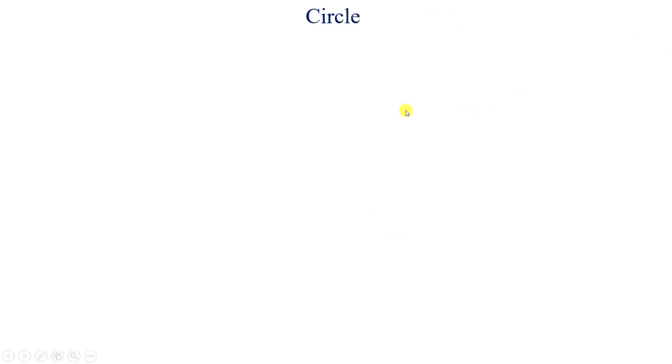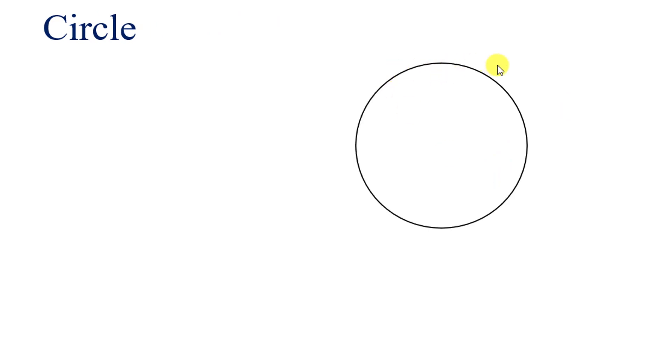Let us try to understand what is exactly meant by circumference of a circle. Circumference relates to circles. In a circle, you will find a center — a fixed point. I will draw a compass. The compass is fixed and you will find the middle point in the circle, meaning the curve is made around that center point.